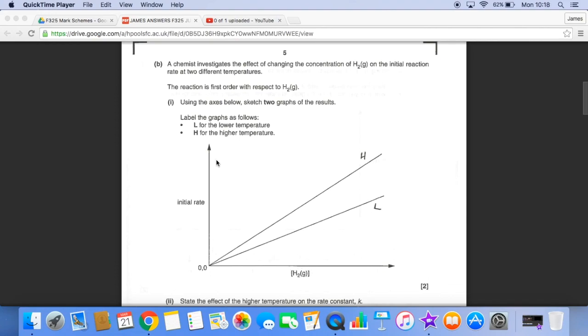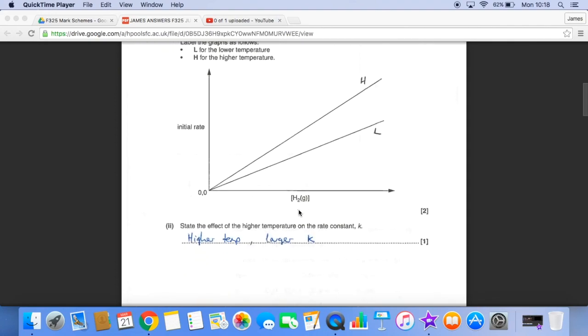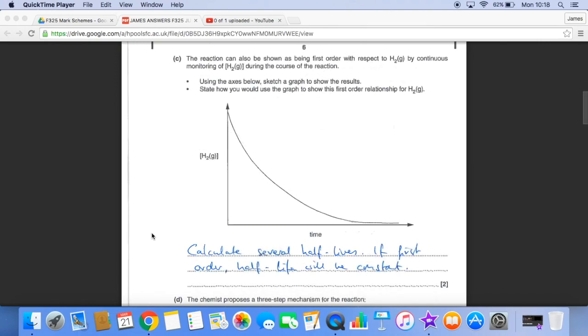So L's at the lower temperature so it has the lower gradient, and H has a steeper gradient. Rate constants increase with temperature, so the higher the temperature the larger the value for K.